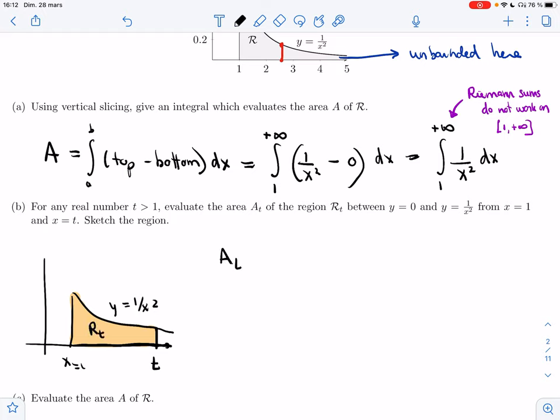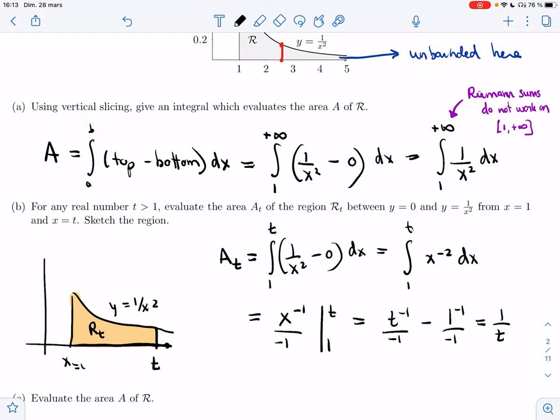And if I apply vertical slicing, I'll get the integral from 1 to t of 1 over x squared minus 0. So same thing, but instead of going to infinity, I stop somewhere. So 1 to t, x to the minus 2. Now this is a finite interval, and so I can use Riemann sums. In fact, because this is a continuous function on 1 to t, I can use FTC. So I get x to the minus 1 over minus 1, evaluated from 1 to t. I'm going to get t to the minus 1 over minus 1 minus 1 to the minus 1 over minus 1. So I get minus 1 over t plus 1.